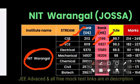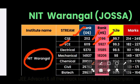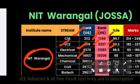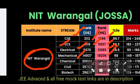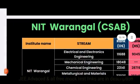For NIT Aurangabad, Electrical is 9,370 for other state and 11,585 for home state. Mechanical is 14,000 for other state and 18,000 for home state. Chemical is 20,000 for other state and 26,000 for home state. Civil is 25,000 for other state and 30,000 for home state. Biotech is 29,000 for other state and 41,000 for home state.